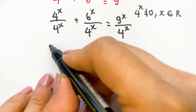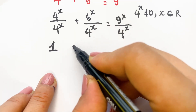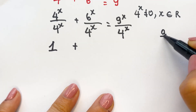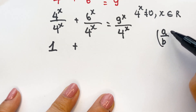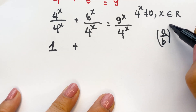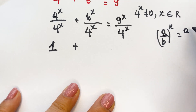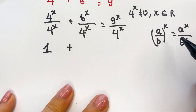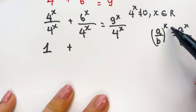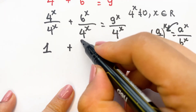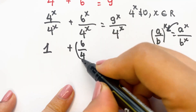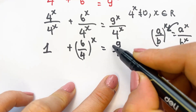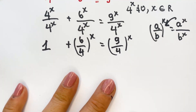So we can write 1 plus — using the rule that A over B, whole power x, equals A power x over B power x — therefore you can write 6 over 4, whole power x. And then here, you write 9 over 4, whole power x.